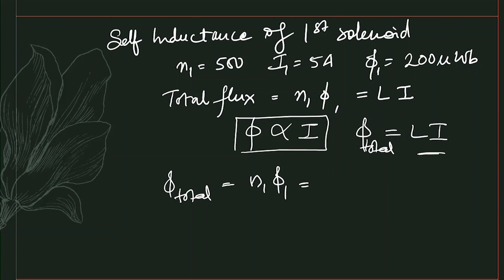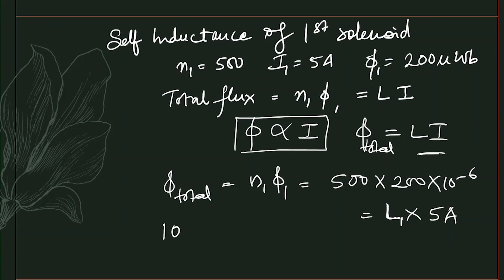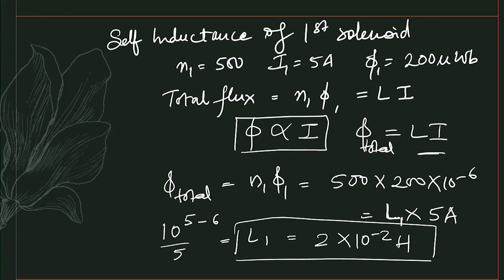Substituting the values: N1 × φ1 = 500 × 200×10⁻⁶ = L1 × 5. This gives 10⁵ × 10⁻⁶ = 5·L1, so L1 = 2×10⁻² henry. This is the self-inductance of the first solenoid.